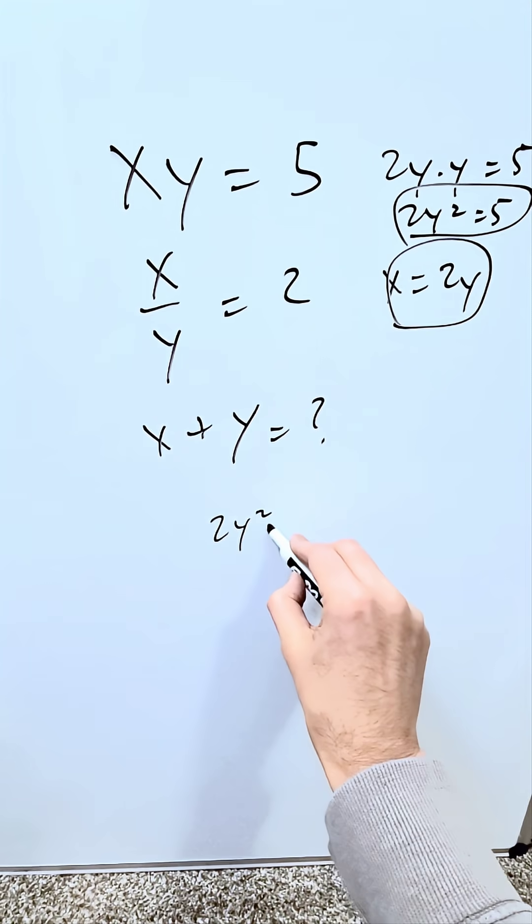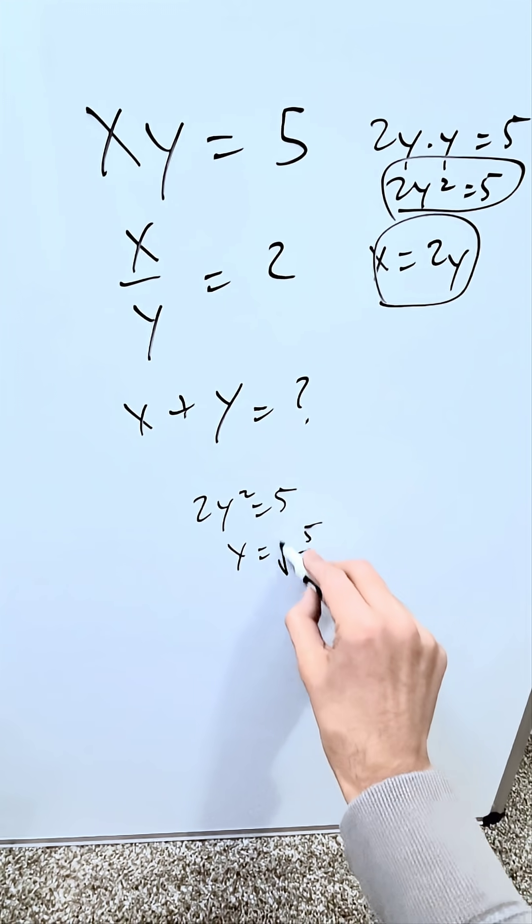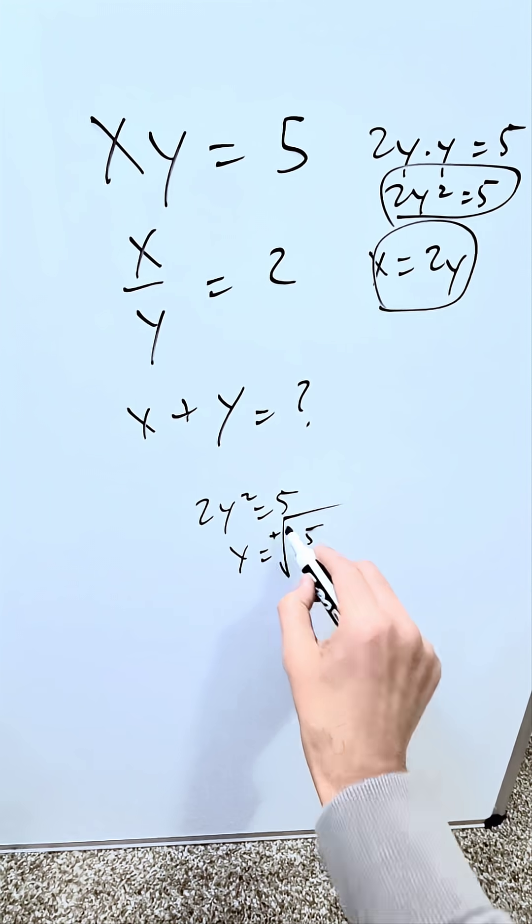We have 2y squared is equal to 5, and y here is equal to the square root of 5 over 2. Focusing here only on the positive values.